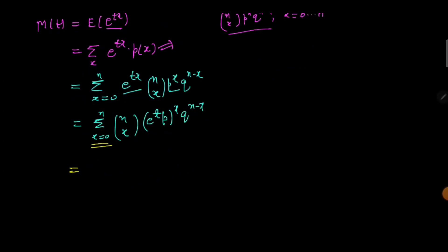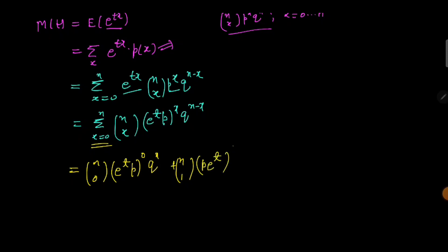If we expand this equation for all values of x, we get: nC0 times (pe^t)^0 times q^n, plus nC1 times (pe^t)^1 times q^(n-1), plus dot dot dot, plus nCn times (pe^t)^n times q^(n-n), which equals q^0. We can see that this is simply the binomial expansion.